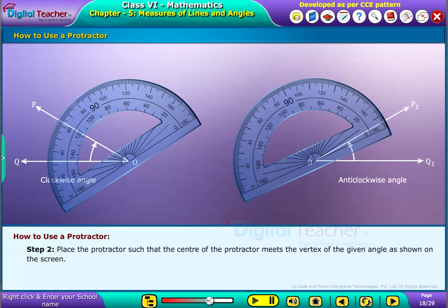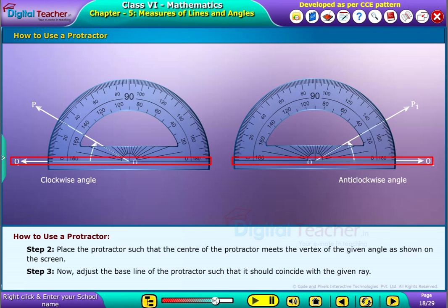Step 3: Now adjust the baseline of the protractor such that it should coincide with the given ray.